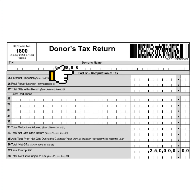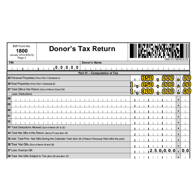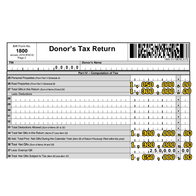Part 4: Computation of Tax. This consists of Item Numbers 25 to 38 and is a continuation of Part 2. Fill up the items as shown in your ONETT computation sheet.